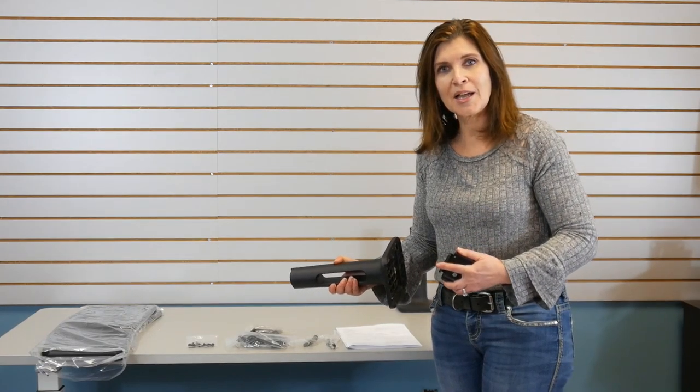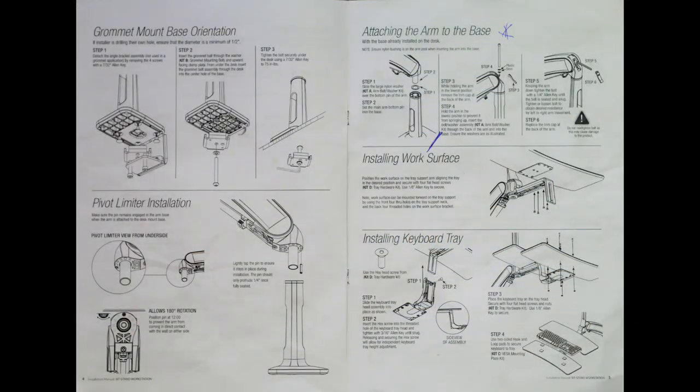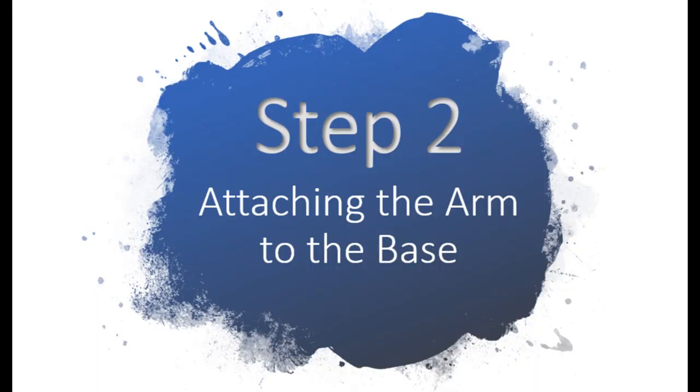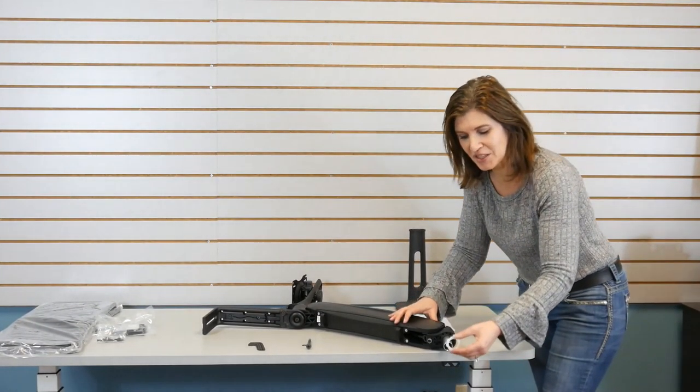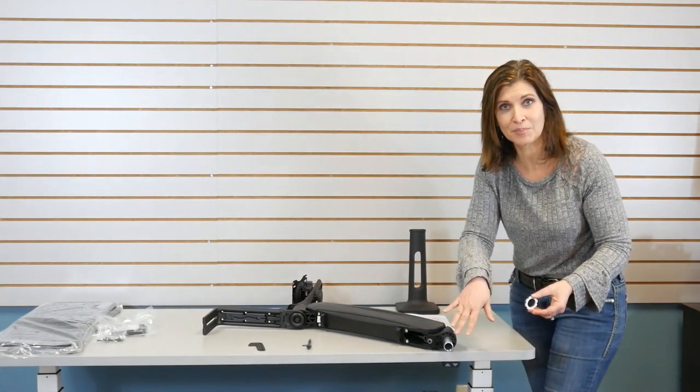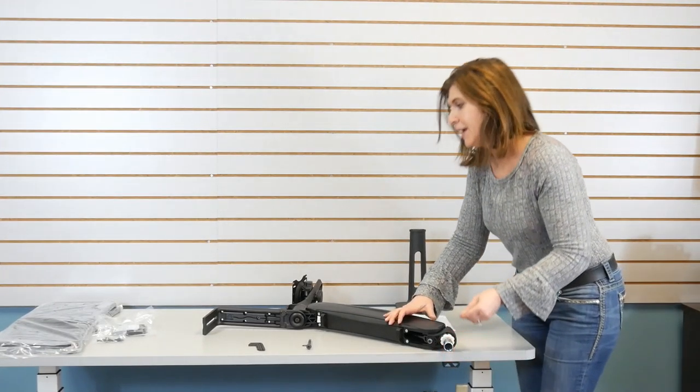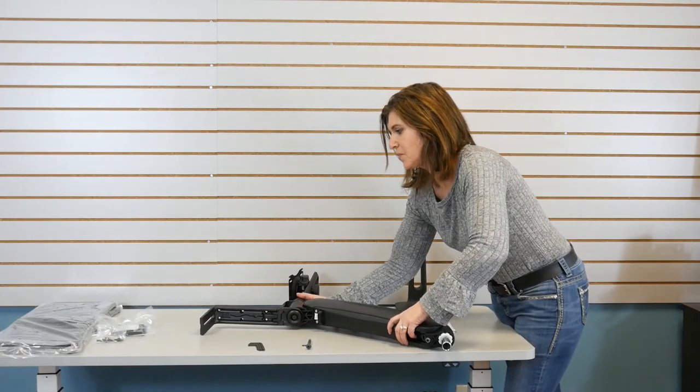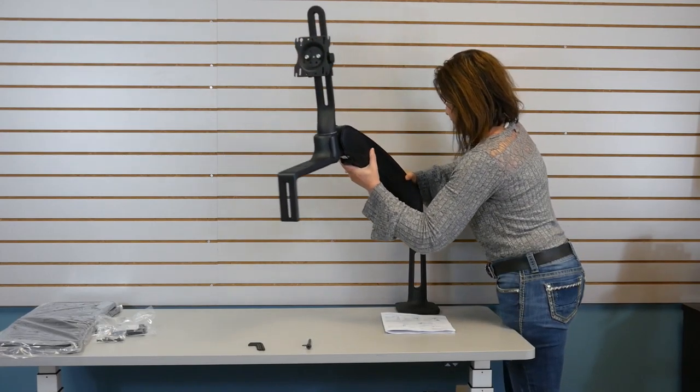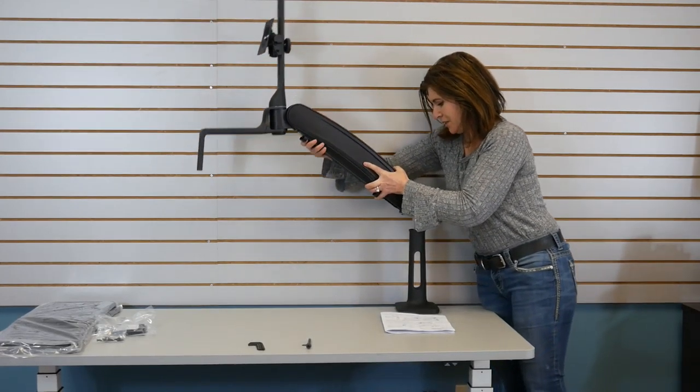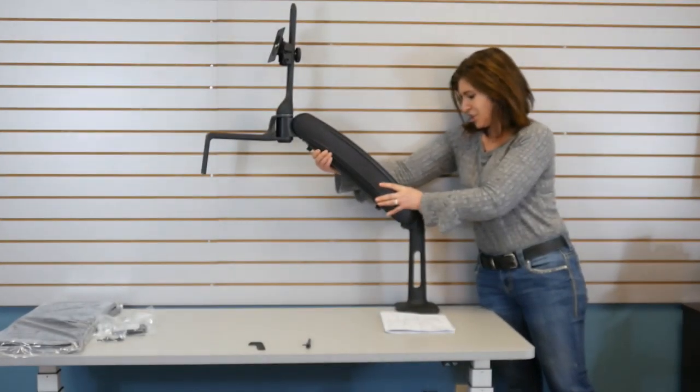Now we're going to go to our next step which is putting the arm onto the base. You're going to take your white washer from Kit A, slide it on. Also make sure you take the plastic wrapping off. I'm just going to slide that in and now you're going to lift this up and insert it and sometimes it takes a little bit getting used to and just give it a little push and now it's in.